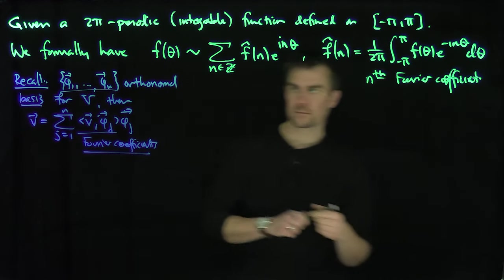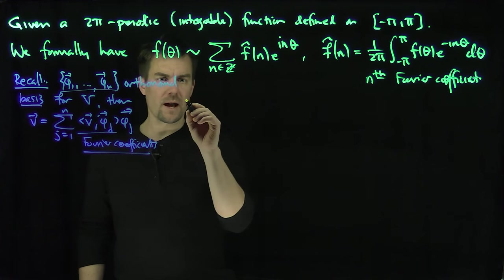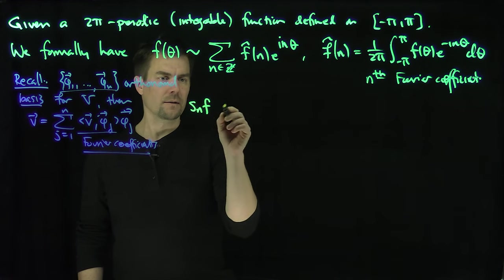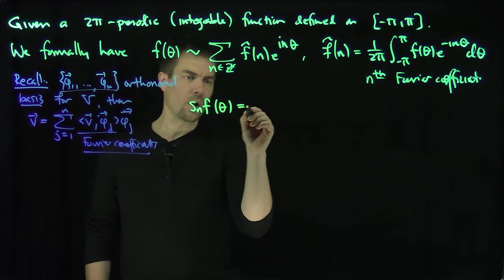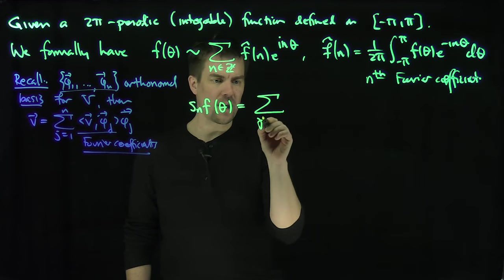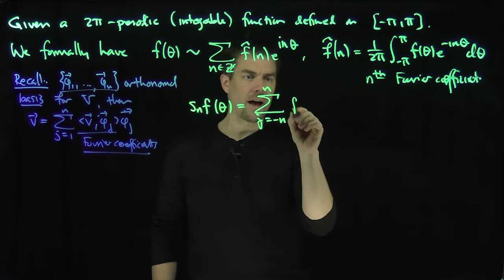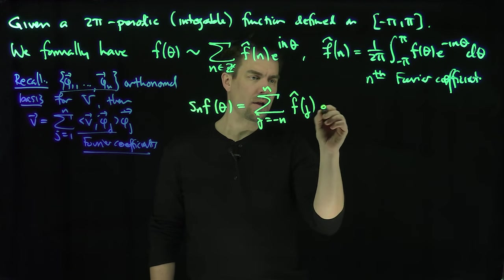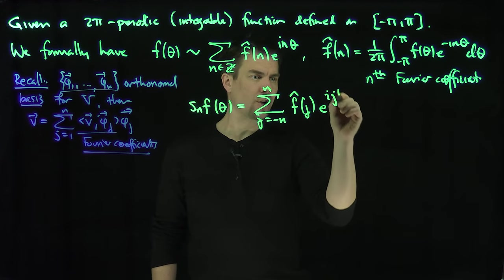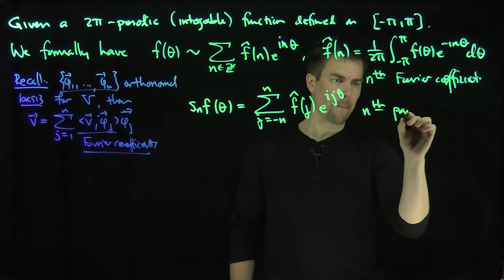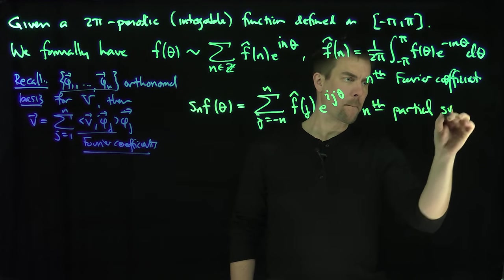So the partial sums, the n-th partial sums, Sₙf(θ), is the sum j goes from negative n to n of f̂(j)e^(ijθ). This is the n-th partial sum.